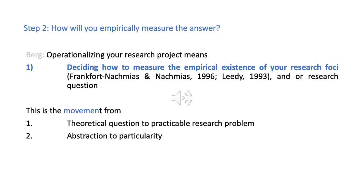The literature review gives you a starting point to think about how you will empirically measure the answer you are looking for. The second part — after doing a literature review, defining concepts, finding a frame and thinking of a method — is to decide how to measure the empirical existence of your research focus. This is a movement from a theoretical question to a practical research question, from abstraction to particularity.